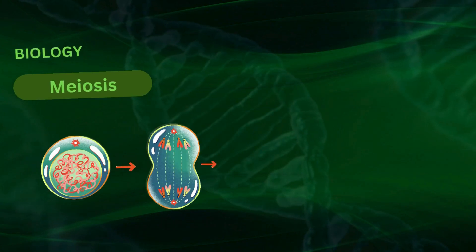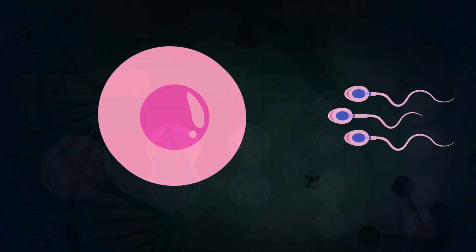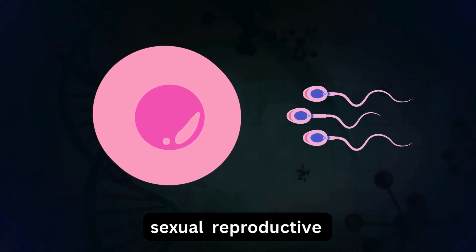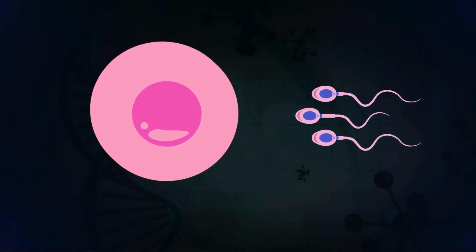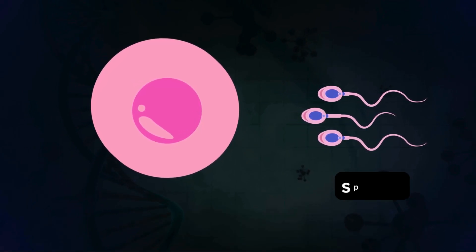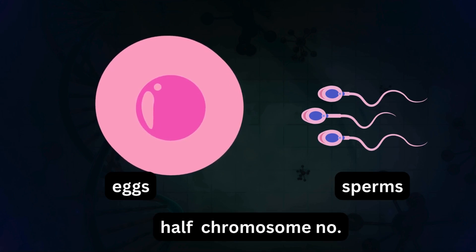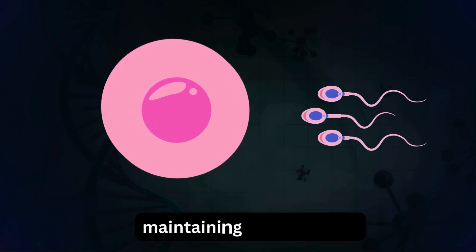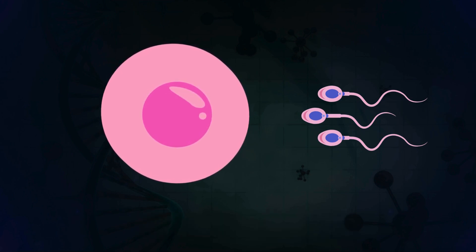Welcome to my YouTube channel Science Academy. Meiosis is a fundamental biological process essential for sexual reproduction in eukaryotic organisms, encompassing two consecutive divisions that result in the formation of gametes — sperms and eggs — with half the chromosome number of parent cells. This reduction in chromosome number is crucial for maintaining the correct ploidy across generations and ensuring genetic diversity.